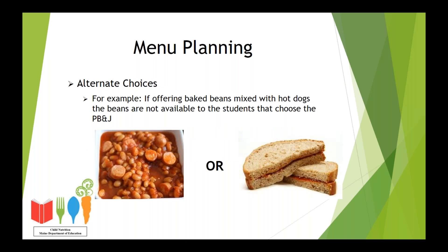Here we have an example of when an alternate meal choice might not have all the vegetable subgroups available. If you offer a peanut butter and jelly sandwich or sun butter and jelly every single day of the week, and one day you offer a combination meal of beans and hot dogs, that bean subgroup is not being offered to the children having the peanut butter and jelly sandwich. One way to correct this is to have some plain beans available for students with the PB&J, or offer another item from the legume subgroup at another time on your salad bar if you have one. Other items where this could happen are shepherd's pie or chili, where they are a combination entrée with your vegetable and meat or meat alternate in one.